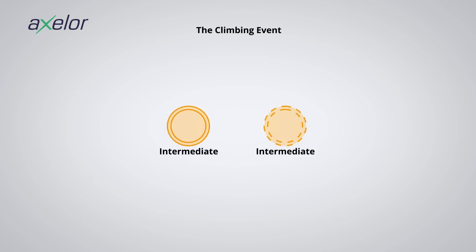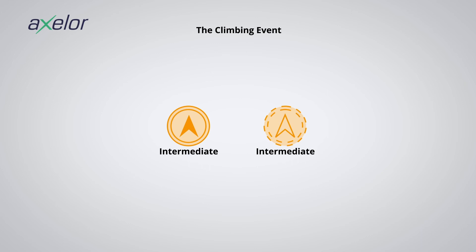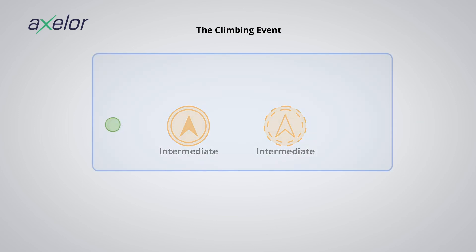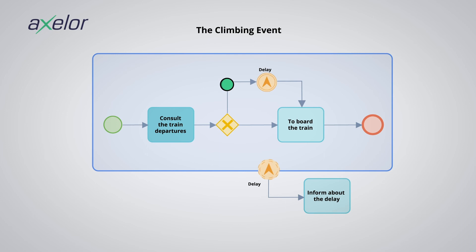The escalation event: these are events represented with an upward arrow pictogram. The escalation event is capable of passing information from a sub-process to a parent process. They are used to indicate during a process the management of a situation that alters the purpose of the process without requiring its interruption. Unlike error events, these events allow a process to receive feedback from the sub-process. In our example, whatever the information concerning the departure, the journey will take place — but if a delay is noted, this information from the sub-process is transmitted to the process via the escalation event without interrupting the journey.